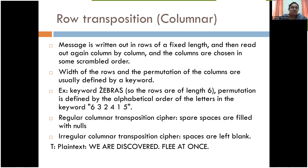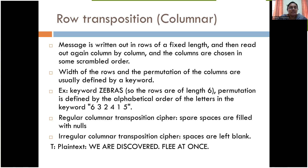Once the message is written in rows of six, we write the columns in the alphabetical order of the keyword letters. 'A' comes first, so that column is written first; 'b' comes next; then 'e'; then 'r' before 's', so 'r' is the fourth column, 's' is the fifth, and 'z' is the sixth. We write column by column according to the alphabetical order of the key.